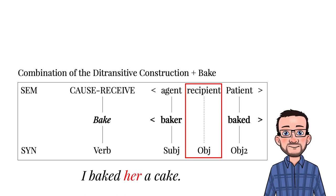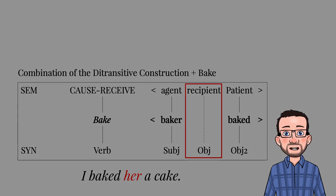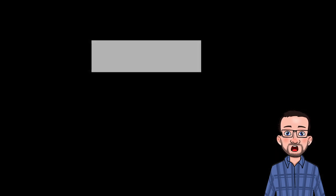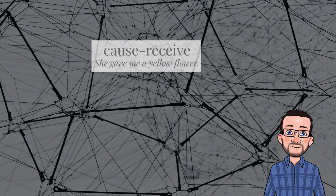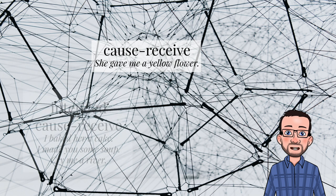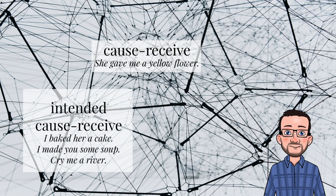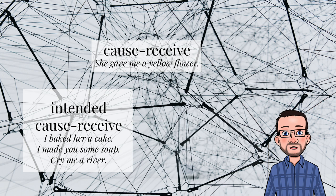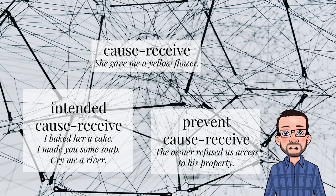The combination of the lexical semantics of the verb and the abstract semantic frame of an argument structure construction gives rise to different related senses of the ditransitive construction that are connected to each other in what Goldberg calls a polysemy network. Verbs of creation, such as bake, combine with the ditransitive construction in the sense x intends y to receive z, such as I baked you a cake or I made you a soup. When Justin Timberlake sings cry me a river, the verb cry is metaphorically speaking a verb of creation, so it fits the ditransitive construction as well. Another related sense is x prevents y from receiving z, such as the owner refused him access to his property. All of these related uses of the ditransitive construction are centered around a caused transfer frame.